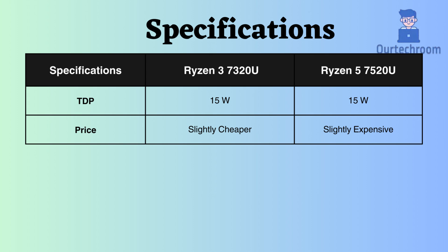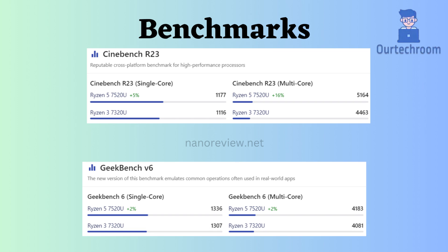Additionally, the Ryzen 5 is slightly more expensive than the Ryzen 3. In terms of benchmark comparison, the Ryzen 5 appears to perform better in Cinebench R23 and Geekbench V6 for both single-core and multi-core scenarios.